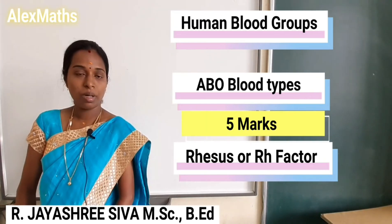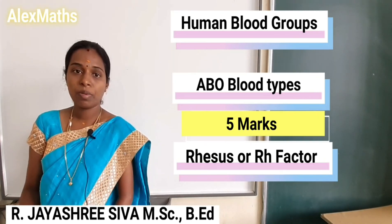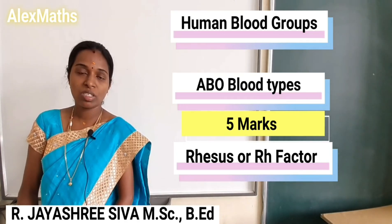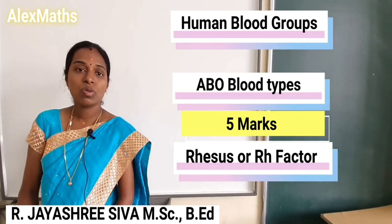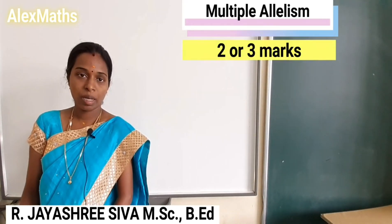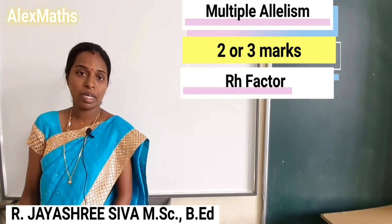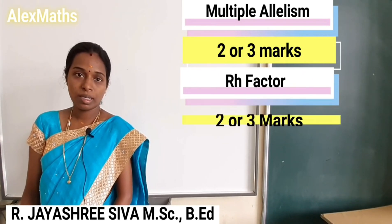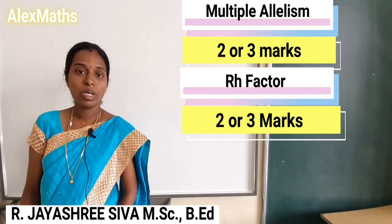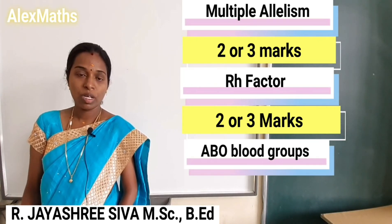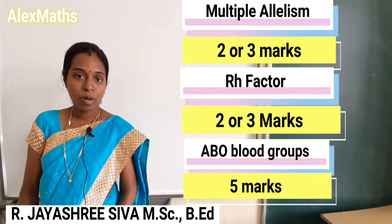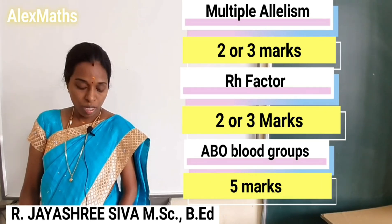Multiple alleles — you can have a 2-mark question on multiple allelism. For example, for 5 marks, explain in depth about the ABO blood group. Give an example for multiple allelism.